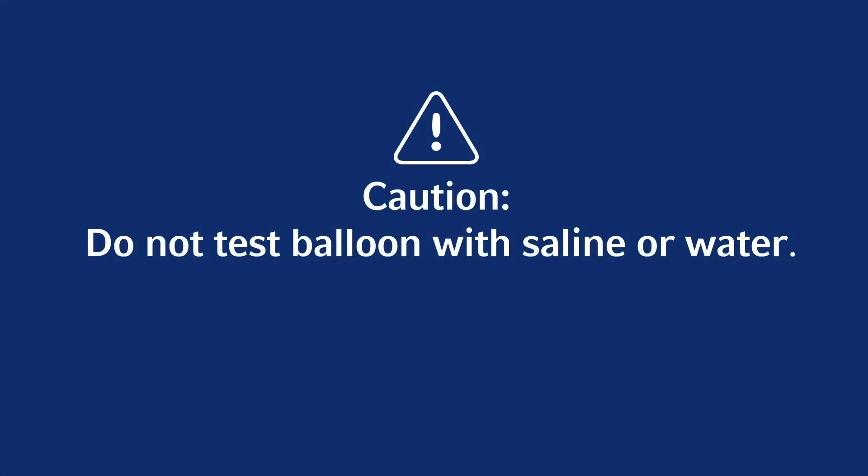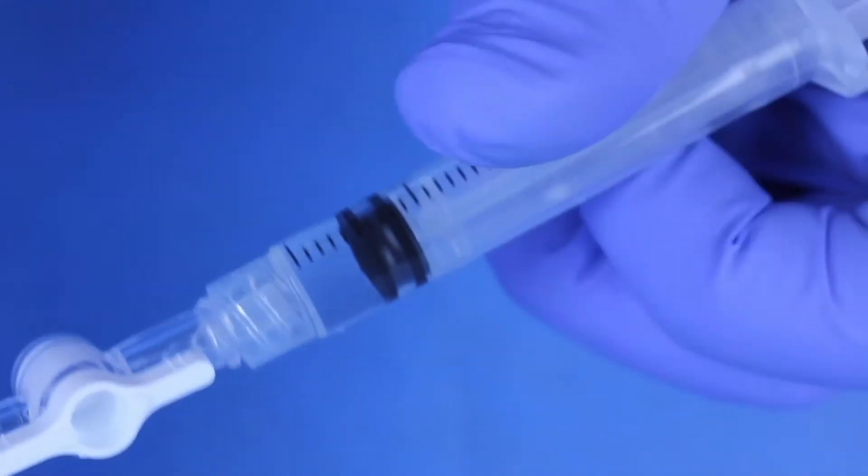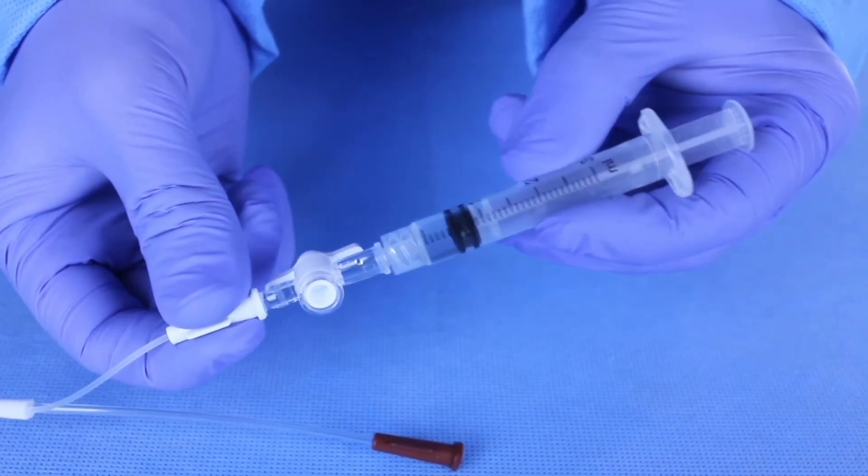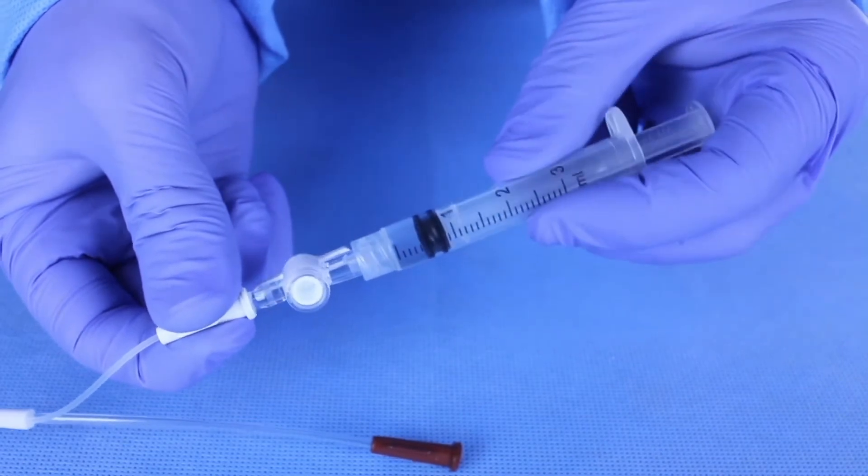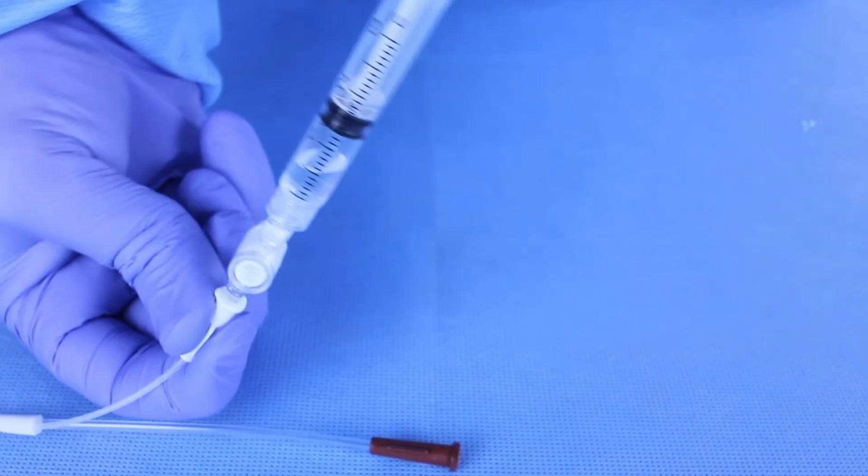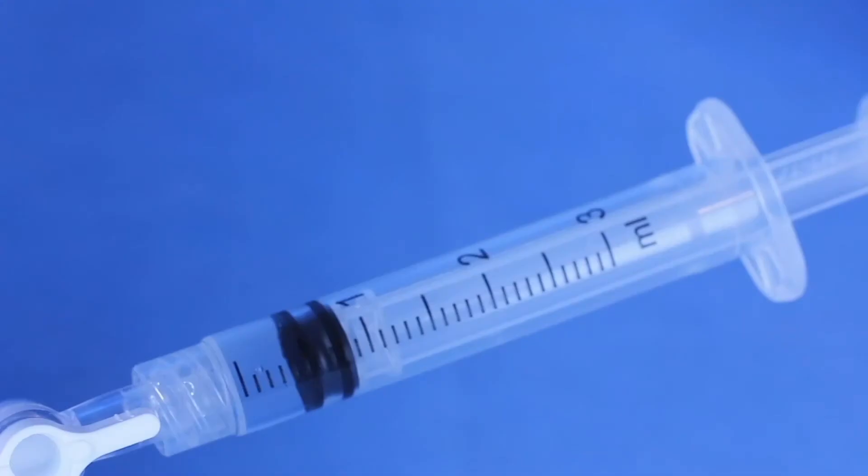Caution: do not test balloon with saline or water. Fill syringe with ½ cc of sterile saline or water. Evacuate air from syringe and attach syringe to balloon lumen. Aspirate to evacuate air from extension line and stopcock. Position air pocket behind fluid in syringe.